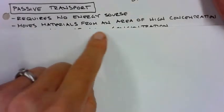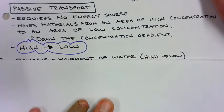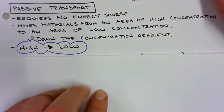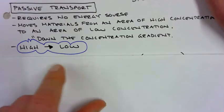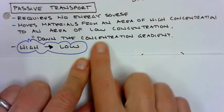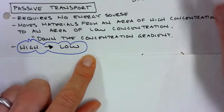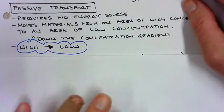It moves materials from an area of high concentration to area of low concentration, which we call down the concentration gradient. So remember it goes from high concentration to low concentration. So if we have a lot of molecules on this side and no molecules on this side, it's going to move to even out. Nature likes things even.